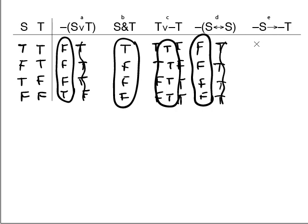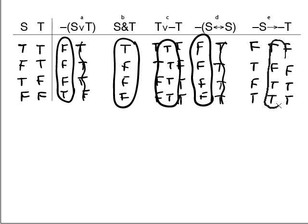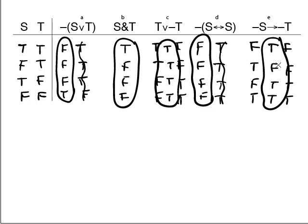Dash-S arrow dash-T. For dash-S, put in the opposite of S: false, true, false, true. For dash-T, put in the opposite of T: false, false, true, true. The rule for the arrow is it's false only when true arrows to false. False arrow false is true; true arrow false is false; false arrow true is true; true arrow true is true. Circle it — so we get true, false, true, true.